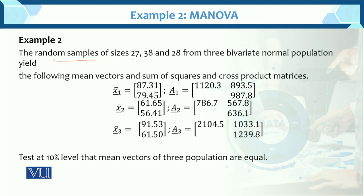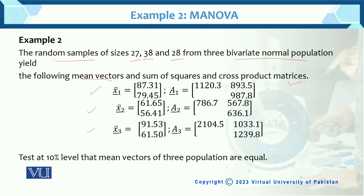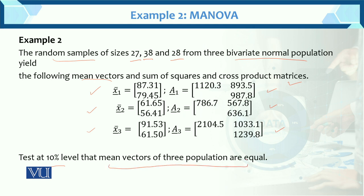A random sample of sizes 27, 38, and 28 from 3 bivariate normal populations. The following mean vectors and the sum of squares cross products are given. These are the mean vectors and these are the sum of squares. It is called bivariate because the dimension is 2 — that is why we call it bivariate normal population.